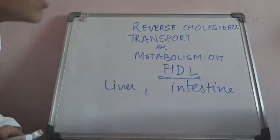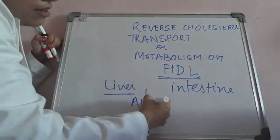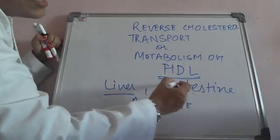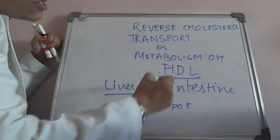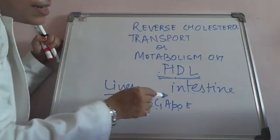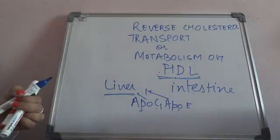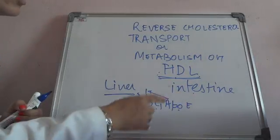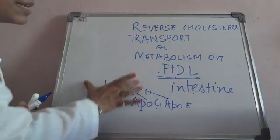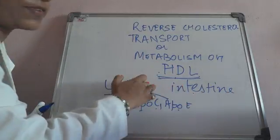Now this HDL — liver will also give me ApoC and ApoE. So intestine also synthesizes HDL, liver also synthesizes HDL, but ApoC and ApoE that is required by HDL is only synthesized by the liver. So the basic is that liver and intestine both will synthesize HDL, and ApoC and ApoE will only be synthesized by liver.